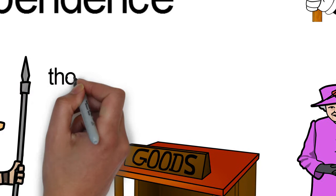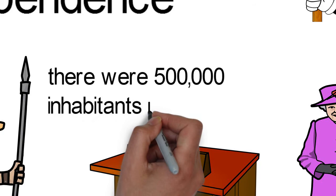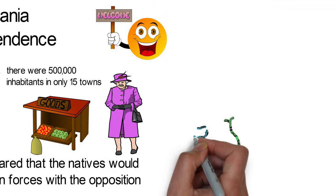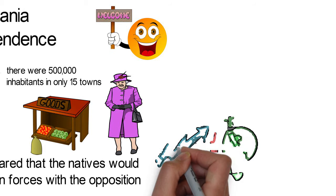By 1957, the region had got so populated that there were 500,000 inhabitants in only 15 towns. Its capital, Dar es Salaam, was the most populated with 128,742 inhabitants.